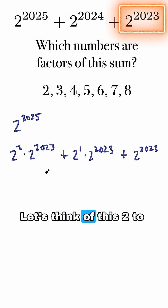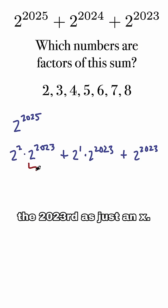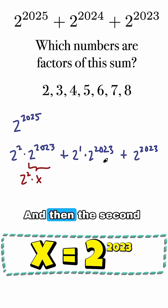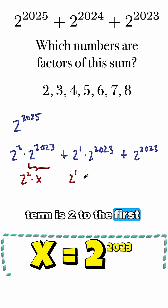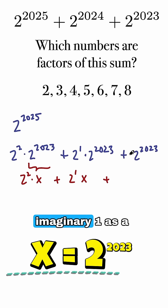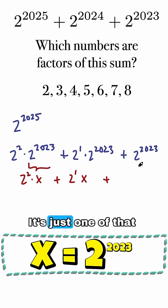Let's think of this 2 to the 2023rd as just an x. So this is really like 2 squared times x, and then the second term is 2 to the first times x, and I'm going to add that.